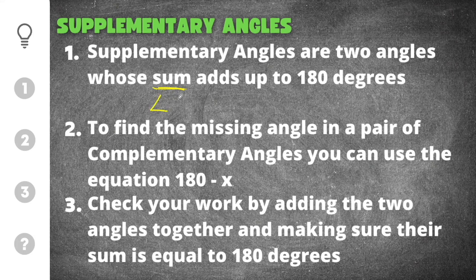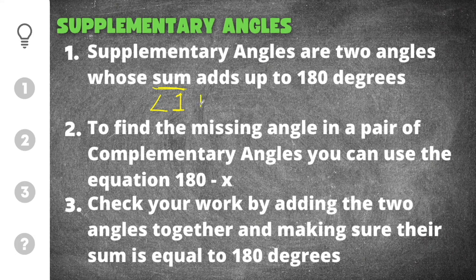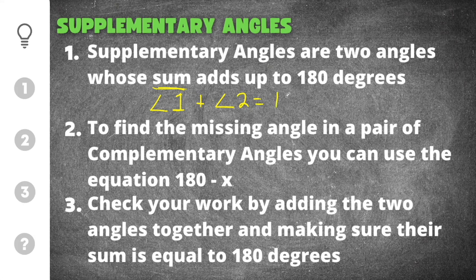That means that the first angle or the measure of angle 1 plus the second angle or the measure of angle 2, those two angles added together will equal 180 degrees.